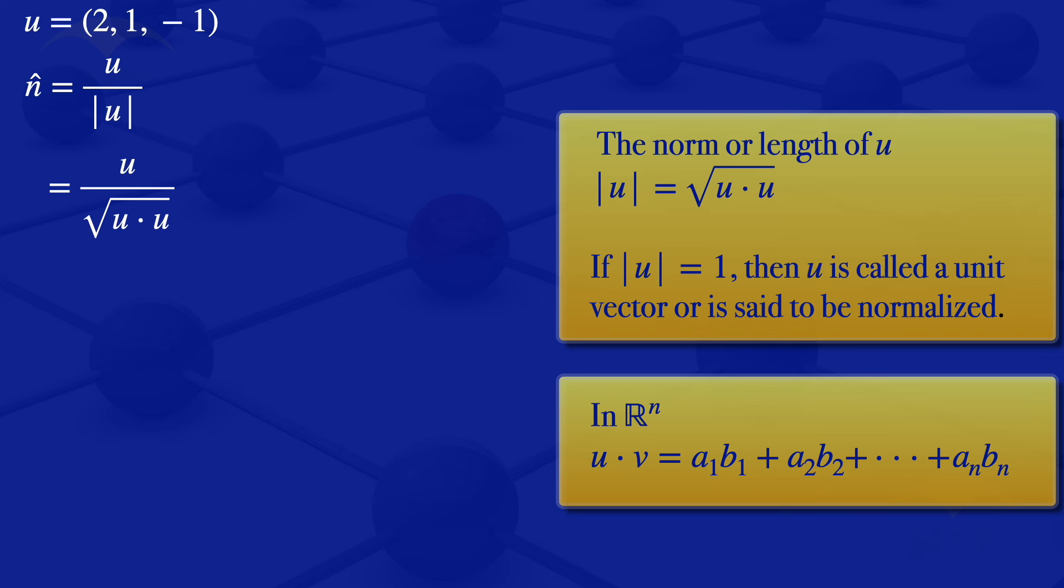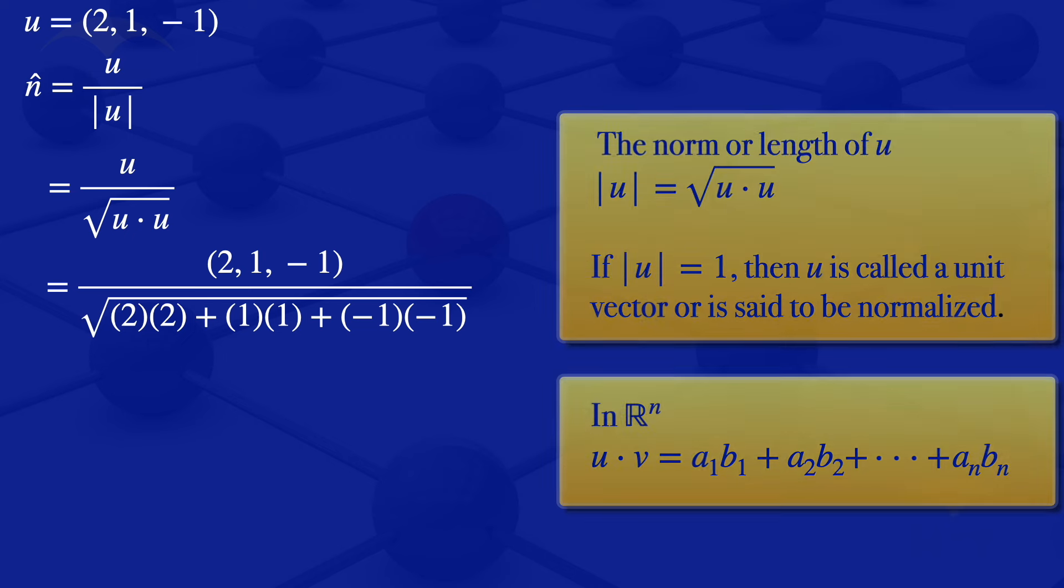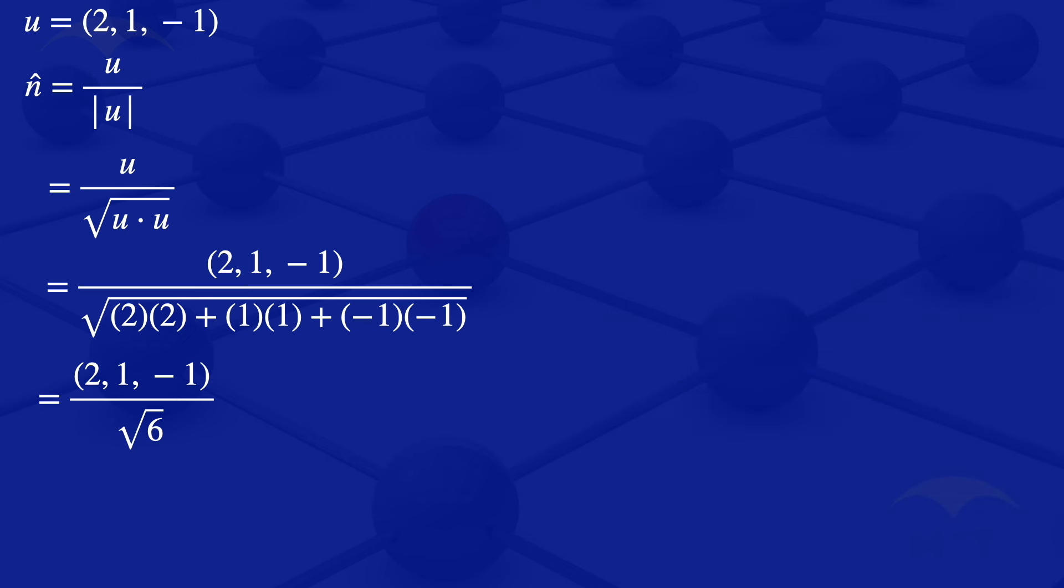Under the square root sign, we have √(2×2 + 1×1 + (-1)×(-1)). 2 times 2 is 4, plus 1 gives 5, plus 1 gives 6. So our normalized vector is (2, 1, -1) divided by √6.